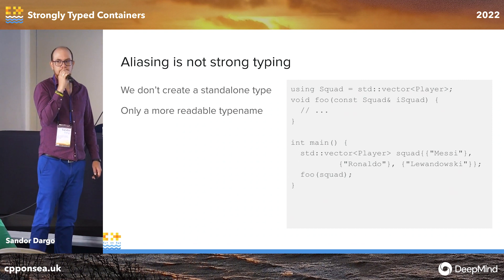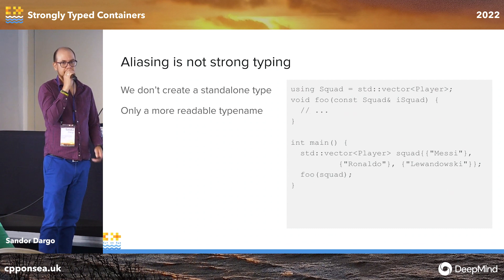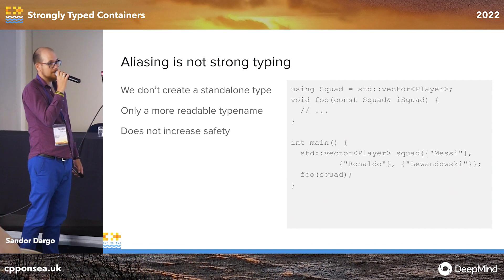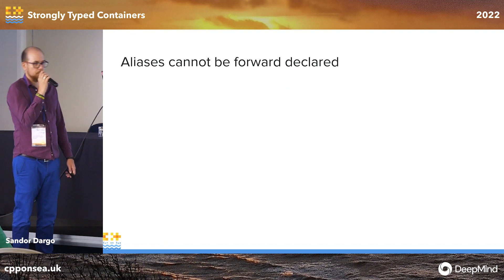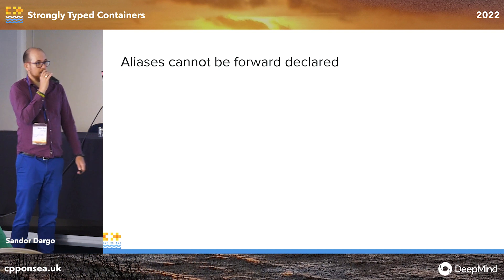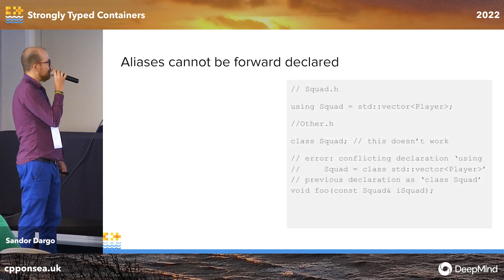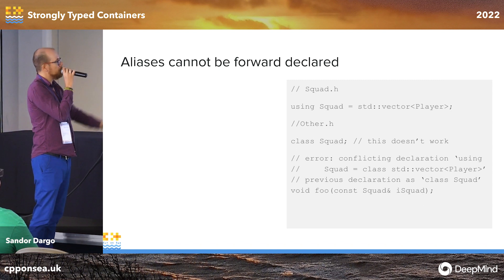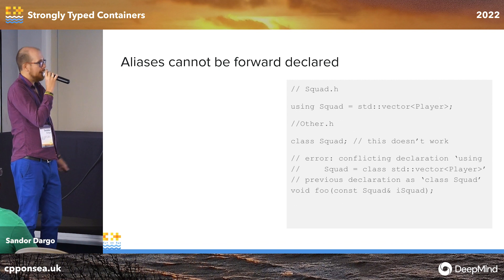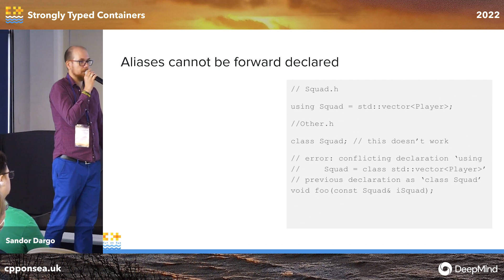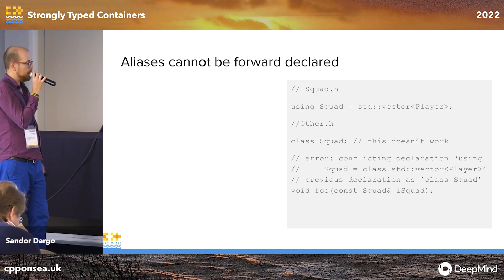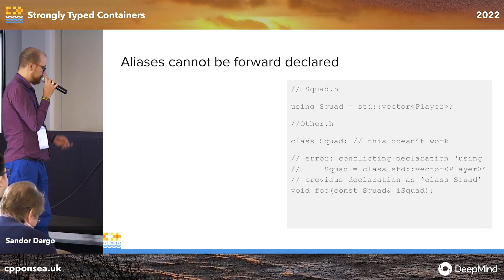Wherever you expect a Squad, you can still pass in just a vector of players. We didn't create a new type — it's just an alias. In some situations, maybe that's the only thing you want or the only thing you have time for. It can be the first step toward a better domain model even though it doesn't increase safety. But aliases cannot be forward declared, which is quite sad. I face this situation in my current project where there are aliases everywhere.